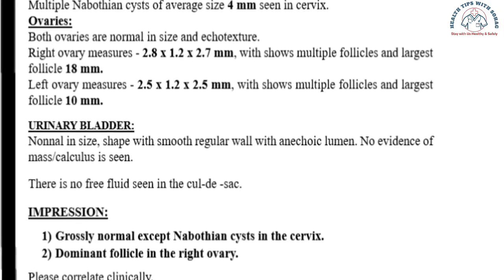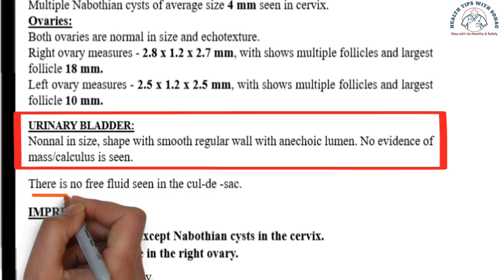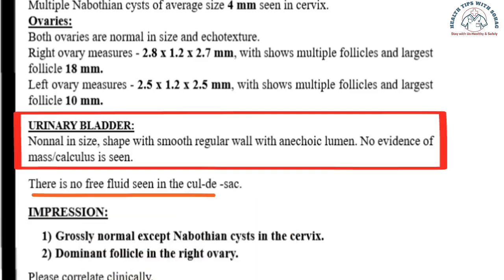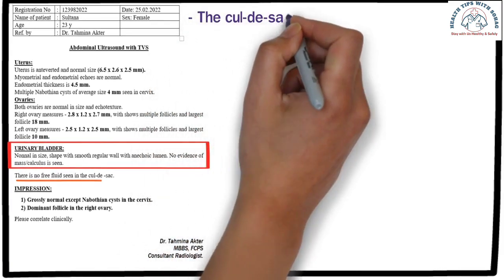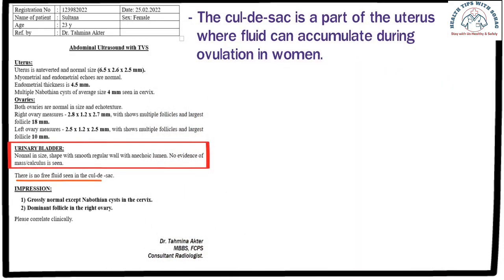Number 3: Urinary bladder. Any problem with the urinary bladder can also be seen through the TVS test. The report states that the bladder is normal in size with a smooth regular wall and an anechoic lumen, and there is no evidence of any mass or calculus. Additionally, the report states that there is no free fluid in the cul-de-sac. The cul-de-sac is a part near the uterus where fluid can accumulate during ovulation. No such fluid is seen in this case, meaning the patient is not currently ovulating.